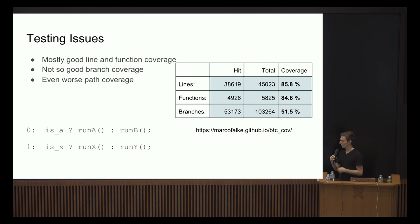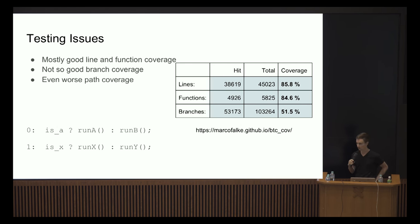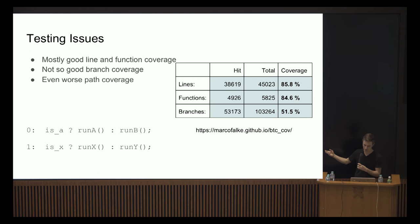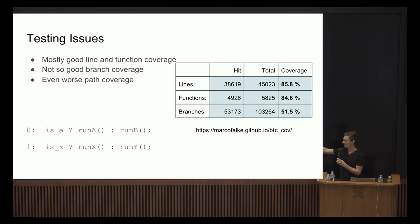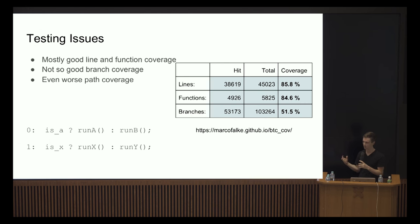...you can never get full path coverage. For example, take this two-line program — if it's the only function and you call it once, you have 100% function coverage and 100% line coverage. But for branch coverage it depends on what you pass in for the booleans. Run it once and you have 50% branch coverage. For path coverage you'd have to run it four times to cover all paths: A and X, A and Y, B and X, or B and Y. Adding another line in the same fashion makes it eight paths — it grows exponentially.